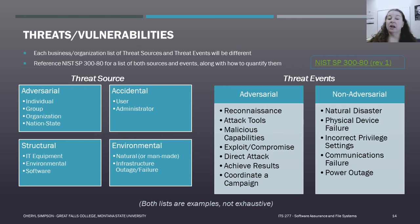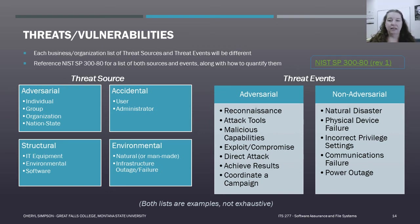Threat events can also be adversarial or non-adversarial. Adversarial events include reconnaissance, attacks, exploits, direct attacks, and coordinated campaigns. Non-adversarial events include natural disasters, physical device failures, incorrect privilege settings done accidentally, communication failures, and power outages — none of these are done intentionally. The NIST SP 800-30 framework has a link running through lists of threat sources and threat events — a great resource when trying to identify what threats could occur in your situation.